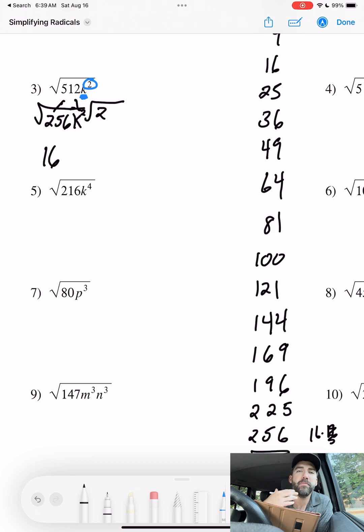And then this guy 2, the square root of 2, stays put because there's nothing that multiplies times itself that gives me 2.